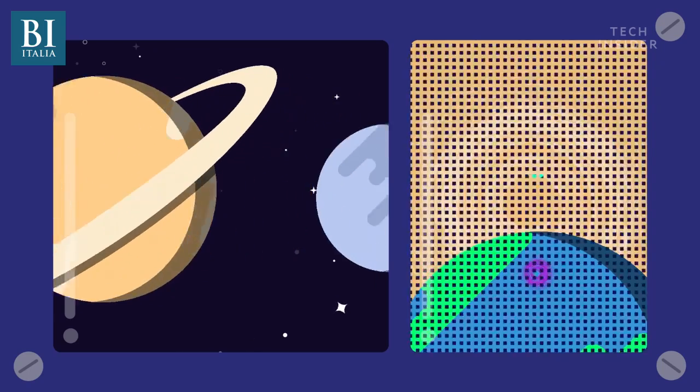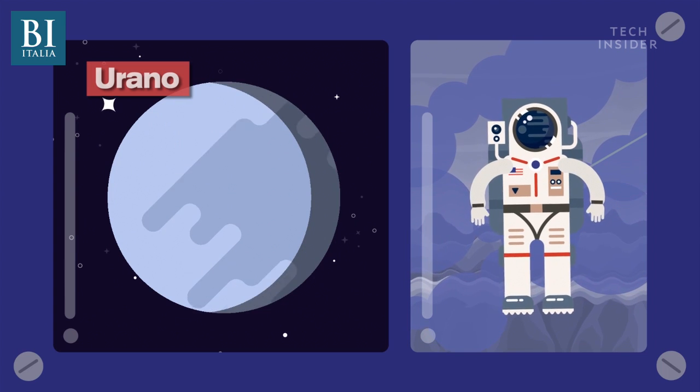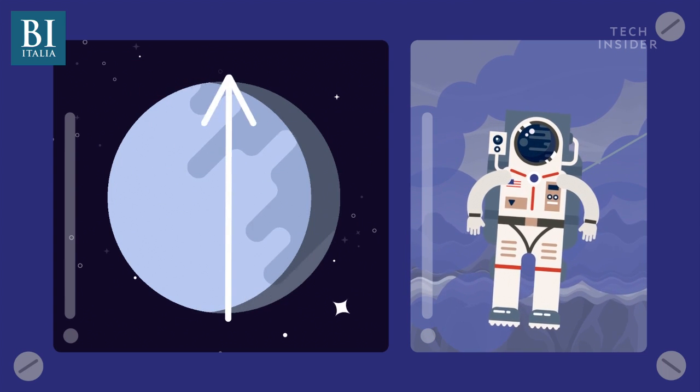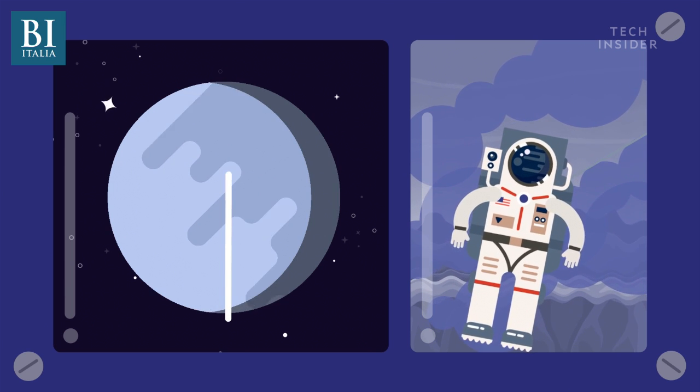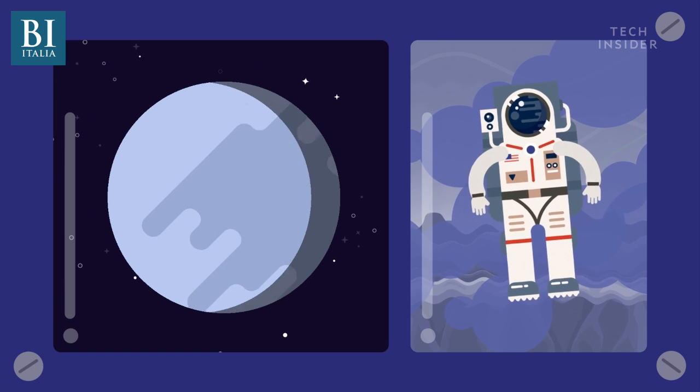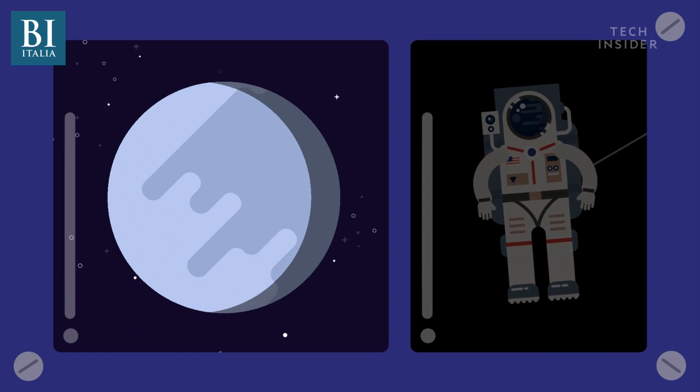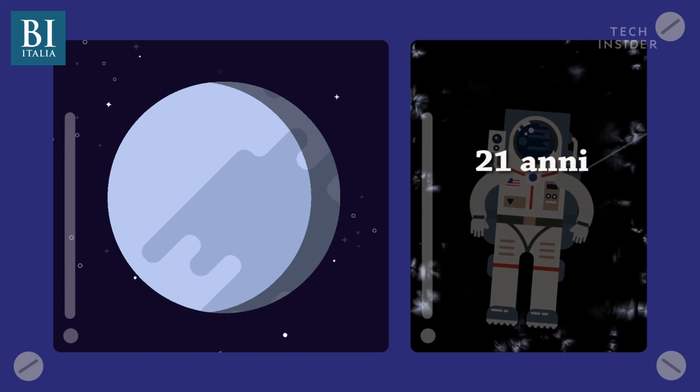Moving right along, next up, Uranus. If you look at its tilt, you'll notice that Uranus spins on its side, which makes its seasons more extreme than anywhere else in the solar system. For example, wintertime has no sunlight. And because Uranus is so far from the sun, winter lasts the equivalent of 21 Earth years. That's 21 years with temperatures that can reach as low as negative 216 degrees Celsius.